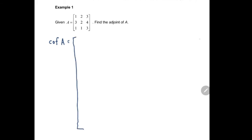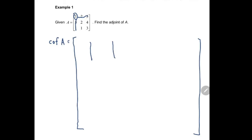I write the matrix in the standard form. To find each cofactor element, you take each element and close its row and column. For example, for the first element 1, you close the first row and first column to get the 2x2 submatrix [2, 4; 1, 3]. For the next element in row 1, you get [3, 4; 1, 3], and for the third element, [3, 2; 1, 1].